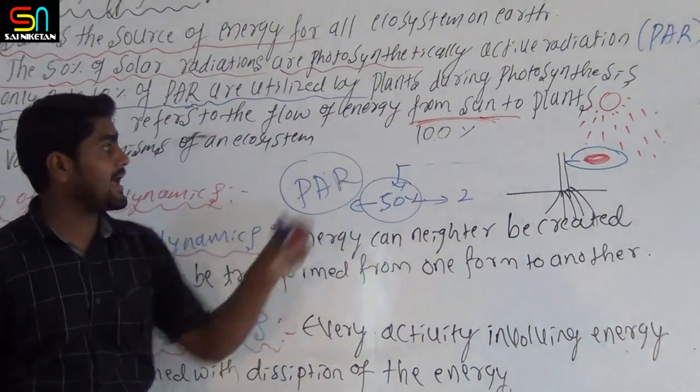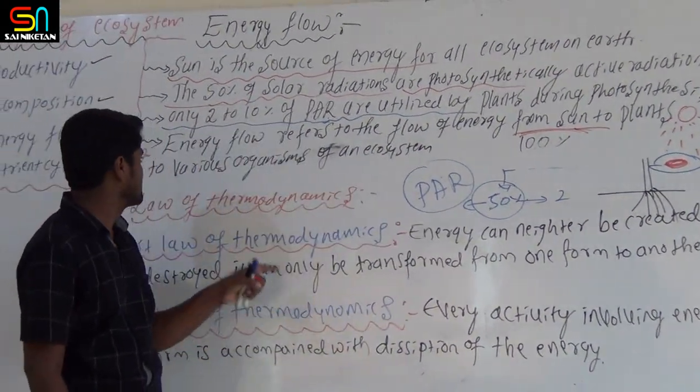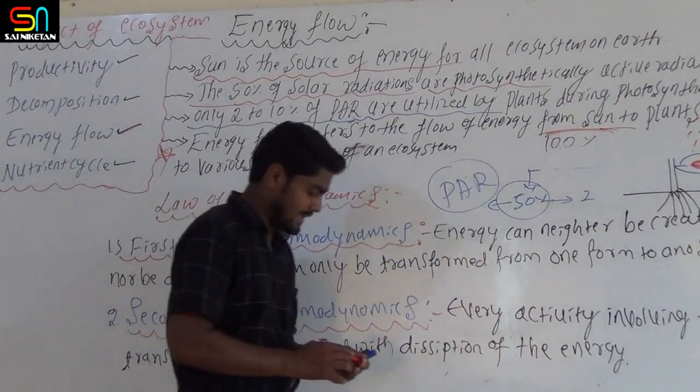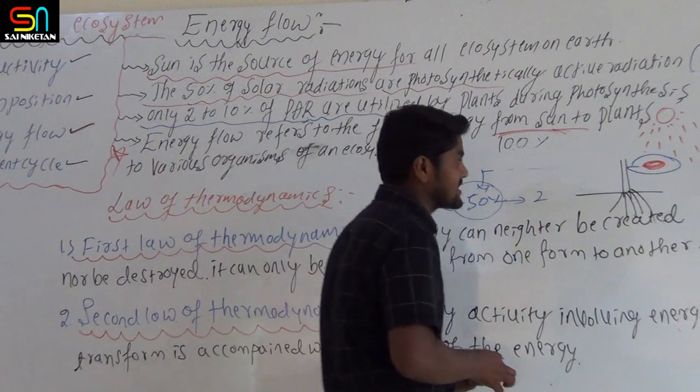Next, from sun to plants, to various organisms of an ecosystem — that is the energy flow.